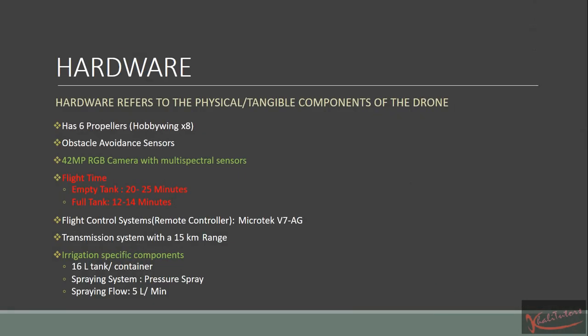Let's talk more about hardware. Hardware refers to the physical or tangible components of the drone — things that we can touch. For example, you can touch your propellers. My drone has six propellers; yours might have four or a different system. It also has sensors used to avoid obstacles, called obstacle avoidance sensors. It has a camera — a 42-megapixel RGB camera with multispectral sensors.